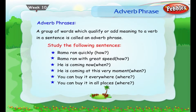How? He is coming now. When? He is coming at this very moment. You can buy it everywhere. Where? You can buy it in all places.